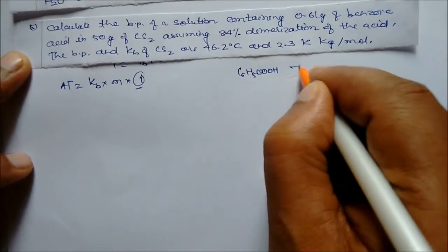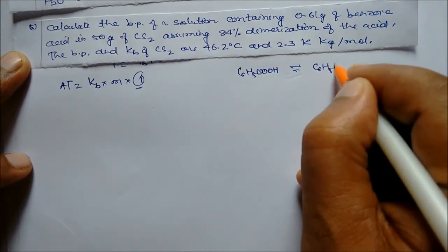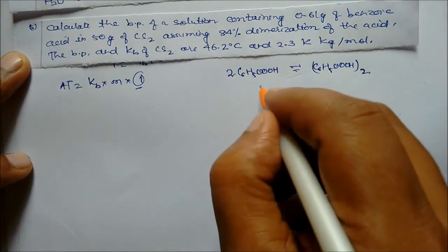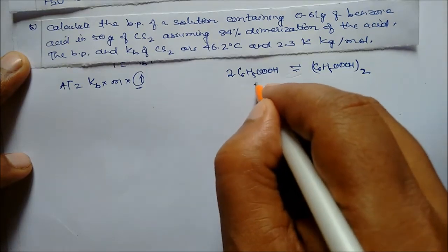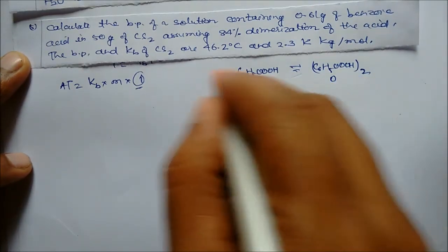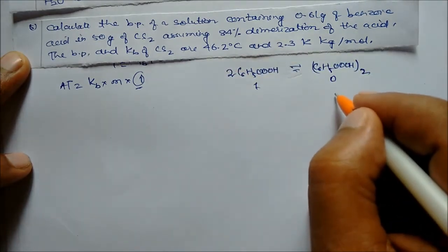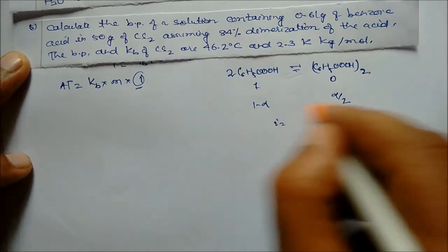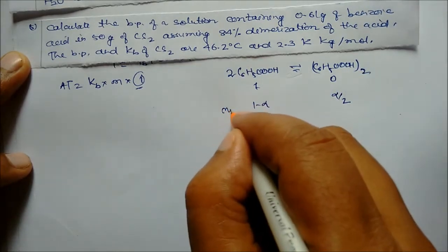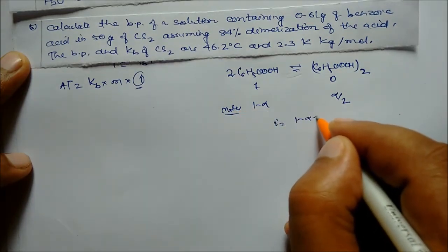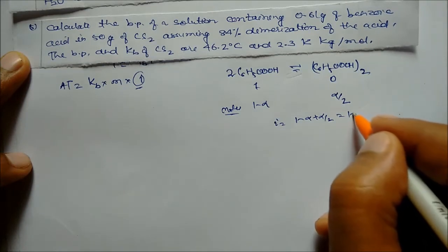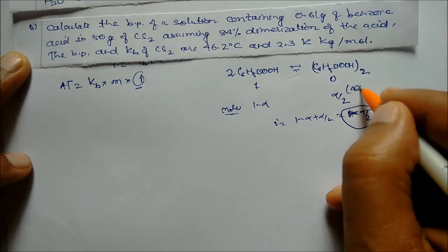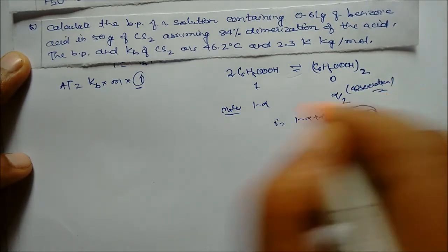For the dimerization of benzoic acid (C₆H₅COOH → (C₆H₅COOH)₂): Initially amount is 1, products are 0. After dimerization: monomer becomes (1 - alpha), dimer becomes alpha/2. Total moles = (1 - alpha) + alpha/2 = 1 - alpha/2. So i = 1 - alpha/2, where alpha is the degree of association.